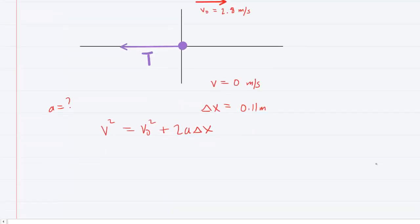So we'll go ahead and fill in the known values. The final velocity is zero. The initial was 2.8 meters per second. Don't forget to square that value. Plus two times acceleration times our displacement of 0.11 meters. Why don't we go ahead and square the 2.8, which gives us 7.84, but then subtract it over to the left side.